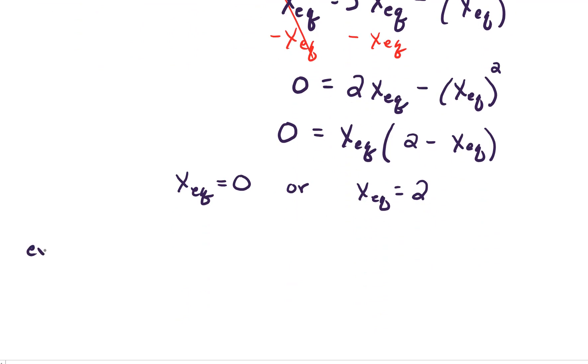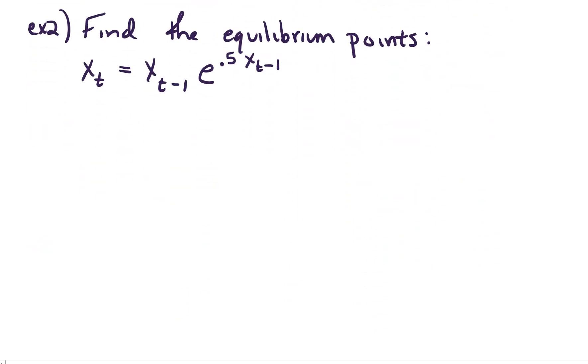Let's do another example. For x sub t equals x sub t minus 1 times e to the 0.5 times x sub t minus 1. And again the first step in doing these problems is to replace all of our x's with x sub eq. What goes in must come out. So everybody has to be x sub eq.